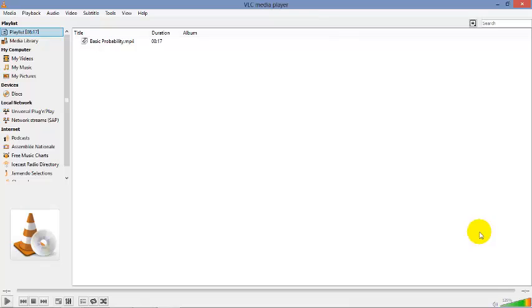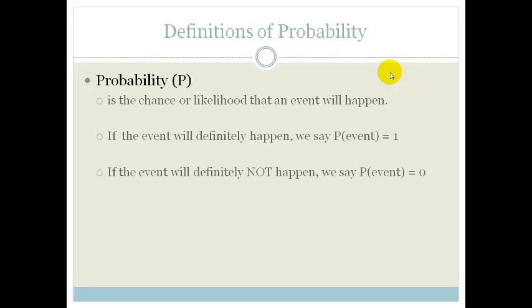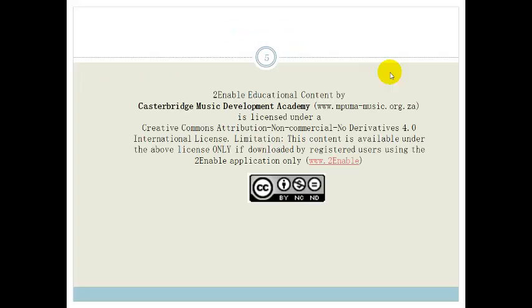Okay, tens. So that was a very good example of basic probability, and we're going to be continuing with probability in the next couple of lessons. So please just remember the definitions: probability is the chance or likelihood that an event will happen. If the event will definitely happen, we say probability is one. And if the event will definitely not happen, we say the probability of the event is zero. Have a great day and I will see you in the next lesson.